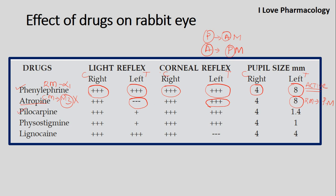Pilocarpine is a muscarinic agonist acting on the M3 receptor. When it acts on M3, there is contraction of the circular muscle fibers leading to a decrease in pupil size. Since the pupil is already constricted, light reflex will be slightly reduced — but there won't be complete abolition; a slight light reflex will be retained. Corneal reflex is retained as well. The pupil size in the test eye will show reduction compared to the control — it causes miosis.